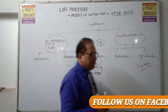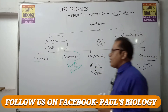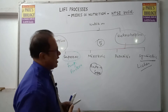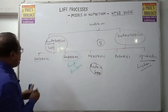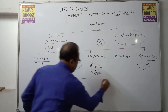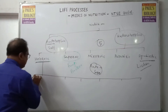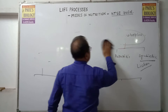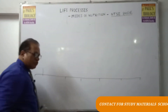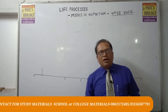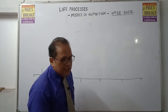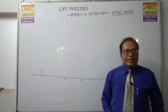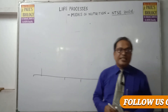Now coming to holozoic nutrition, which is very important for NTSC. The different types of holozoic nutrition can be remembered with a simple mnemonic. To remember them, think of the word 'scavenger' — those who clean dead bodies. For example, a vulture is a scavenger. The right English word for those who clean waste is scavenger.